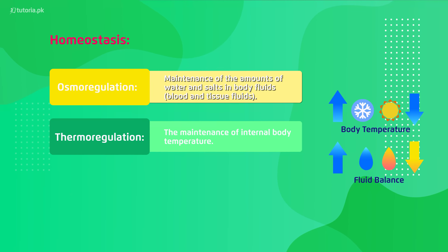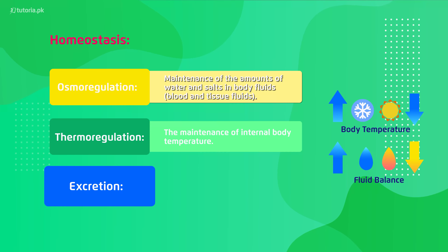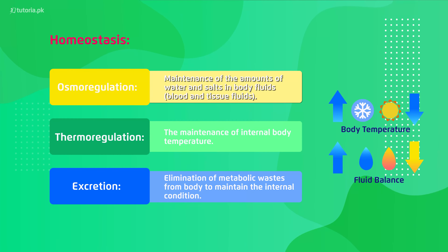The next mechanism through which homeostasis works is thermoregulation. 'Thermo' means heat, so thermoregulation means the maintenance of internal body temperature. That means if the external temperature is more or less, your internal temperature would remain around 37 degrees Celsius.